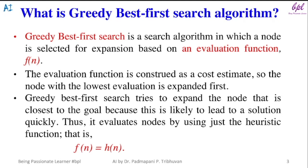Thus, it evaluates nodes by using just the heuristic function, i.e. f(n) equals h(n), where h(n) is a heuristic function.